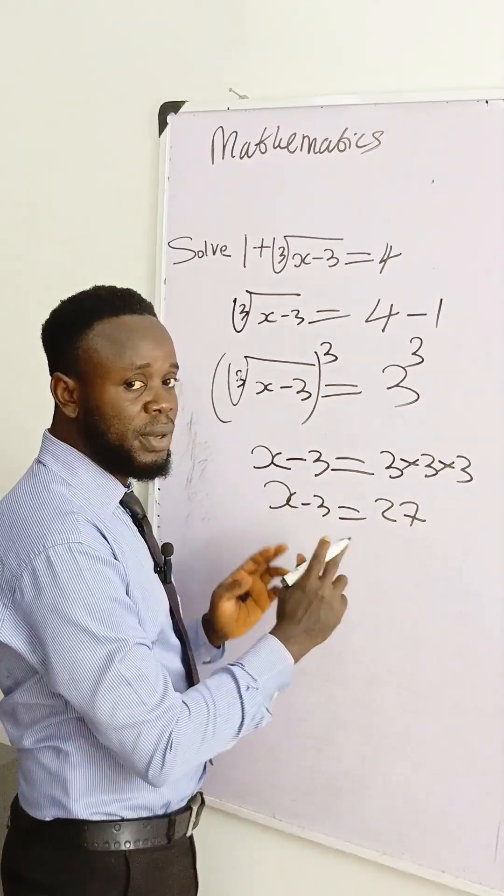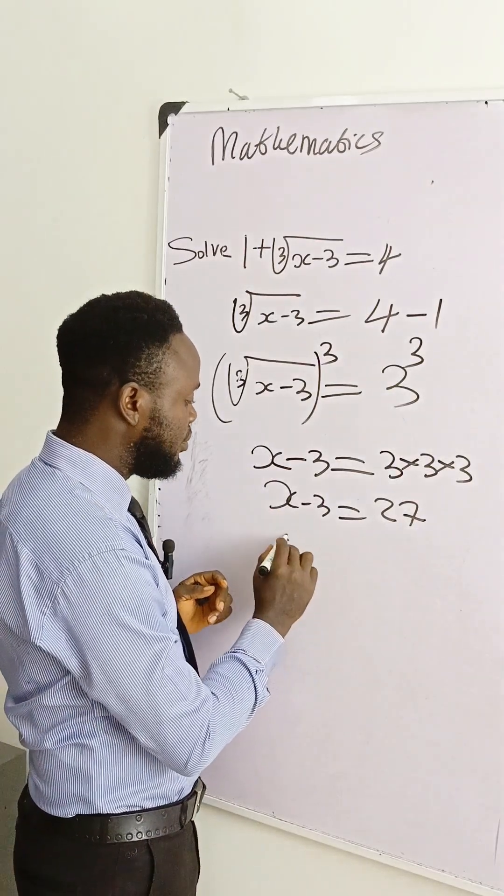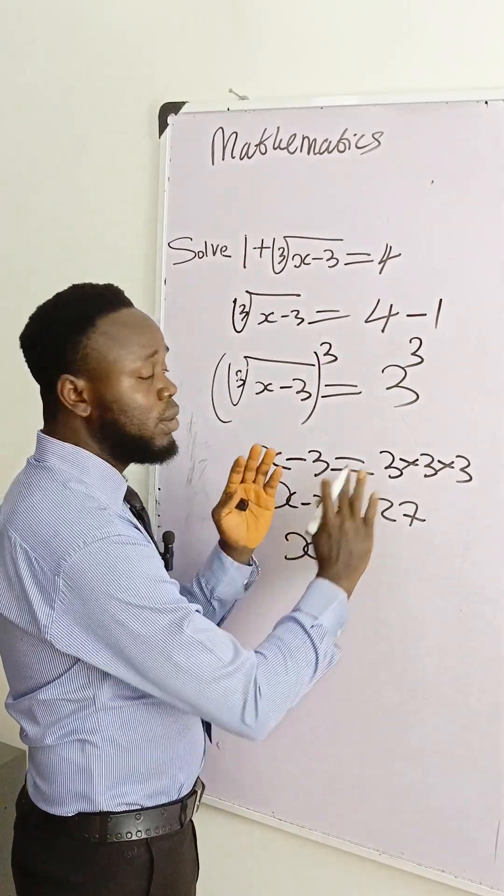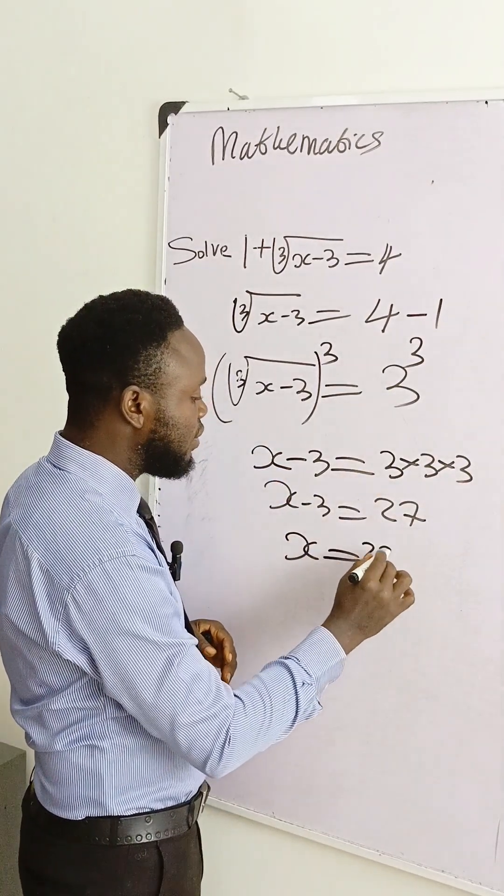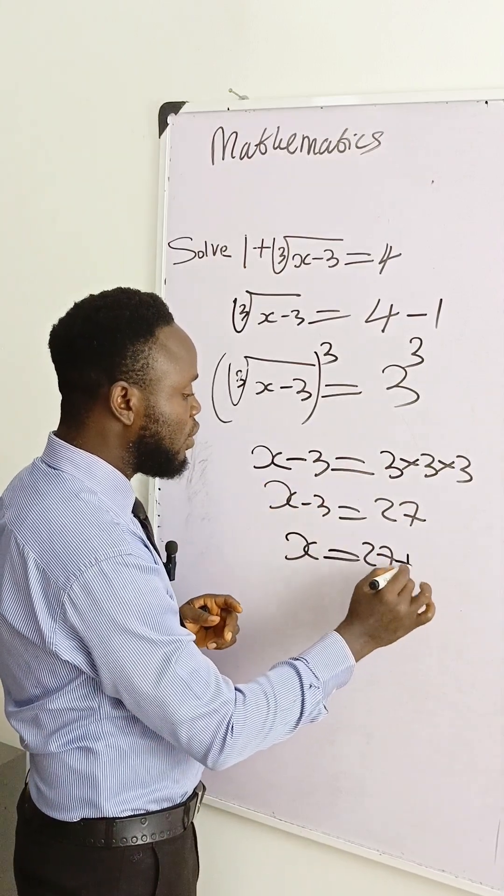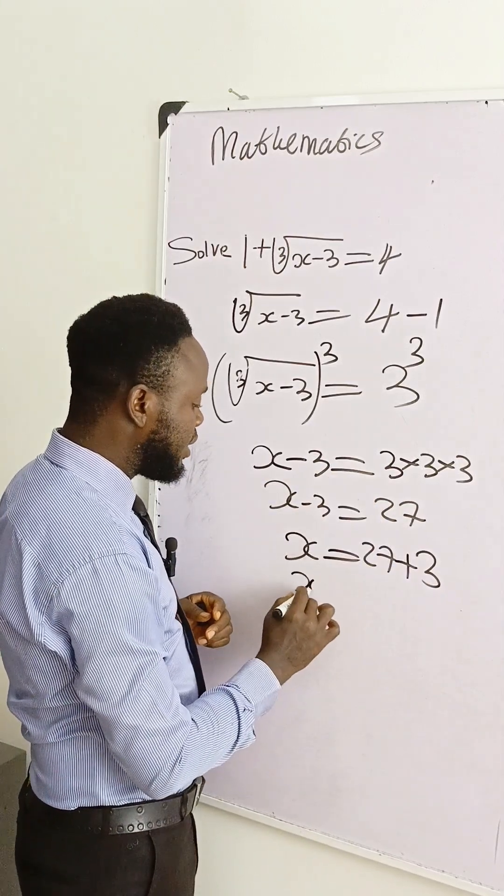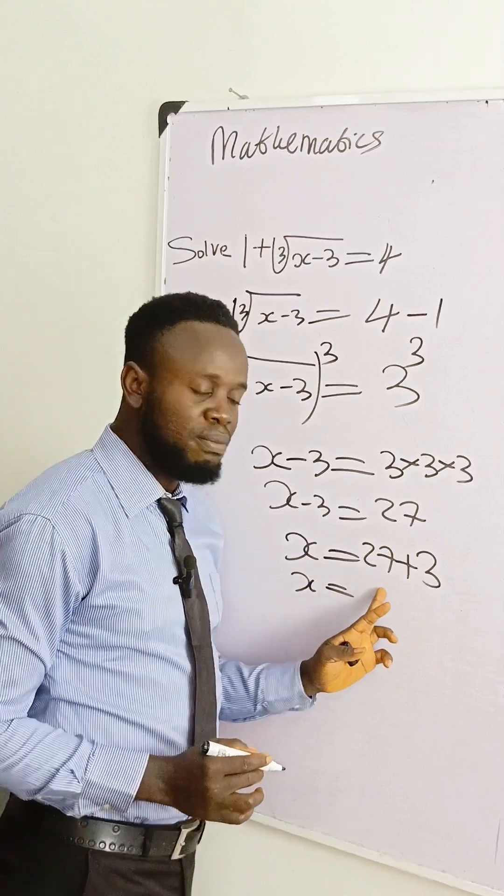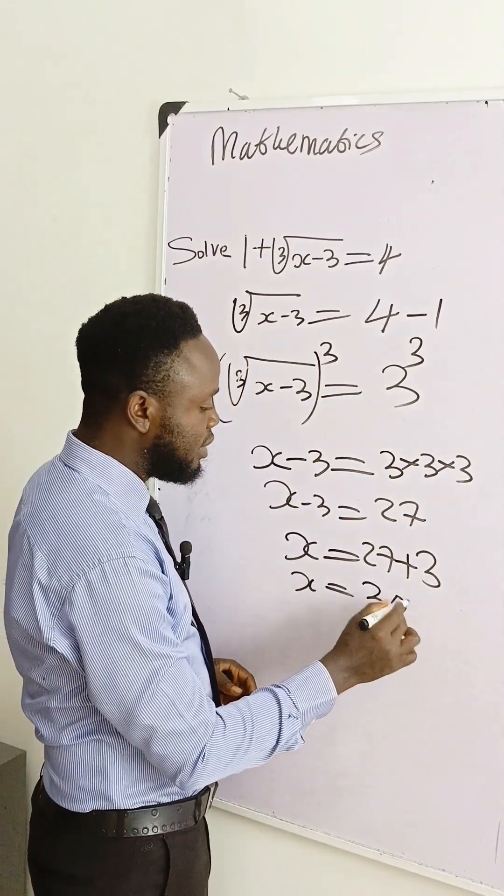Then we add both sides, we add plus 3 to both sides. Or quickly carry minus 3 to this side so that we have x is equal to 27 plus 3. If minus 3 is crossing this side, because plus 3 and x is equal to 3.